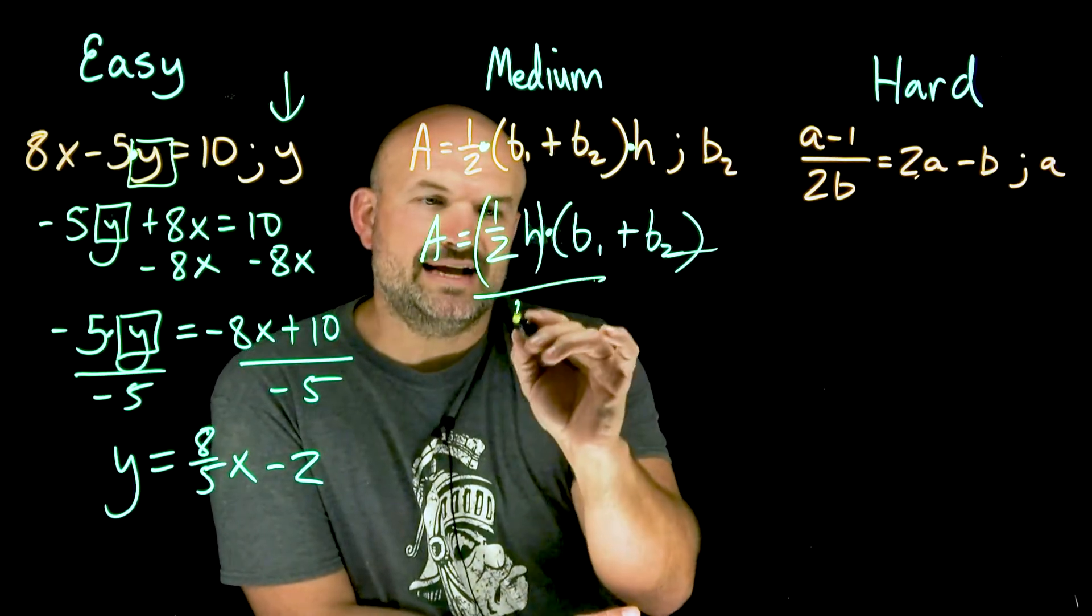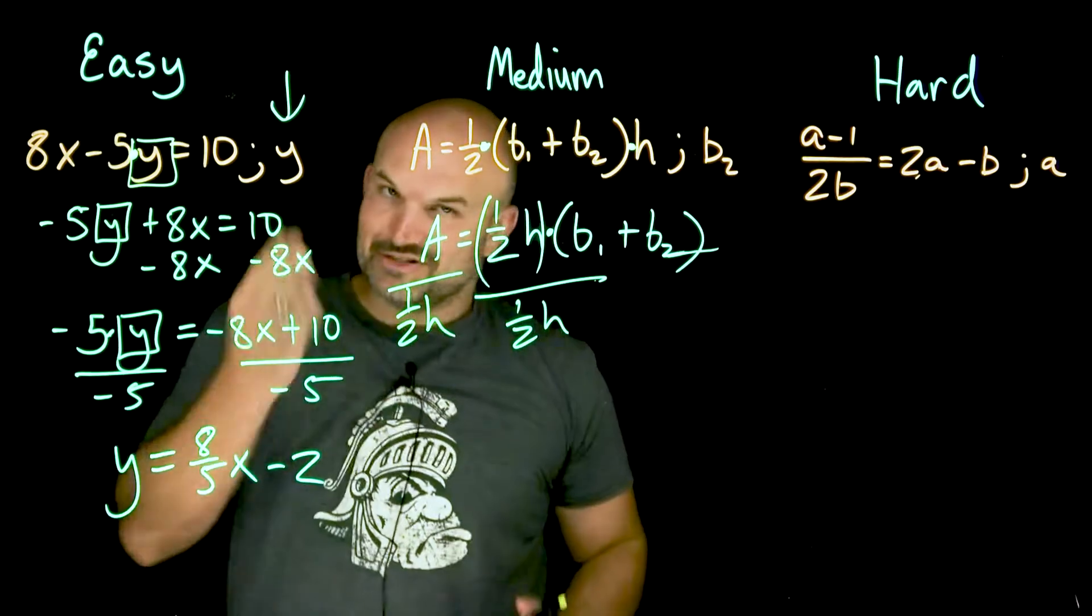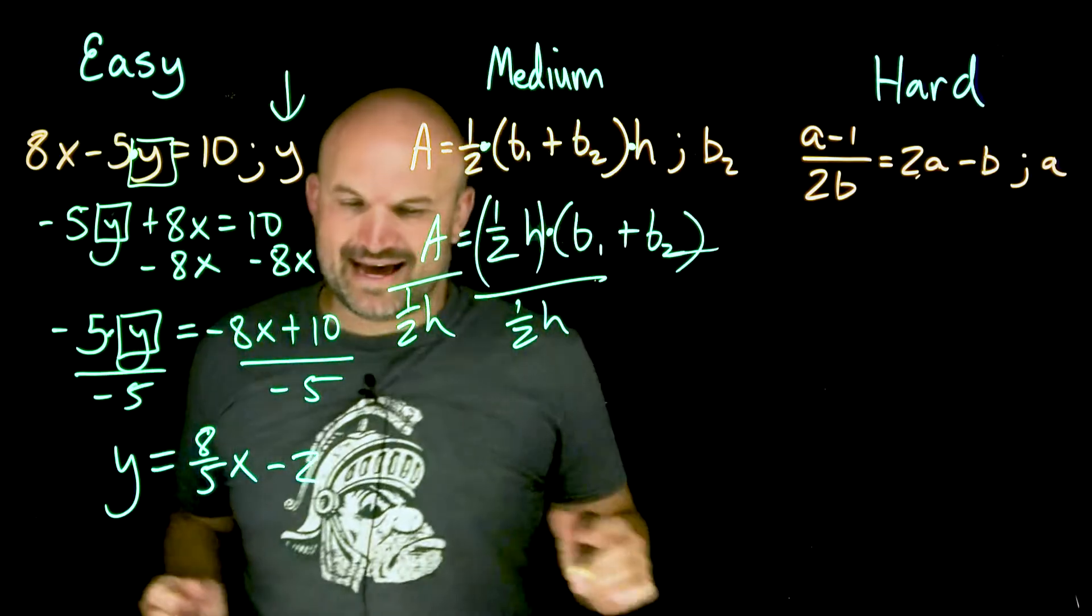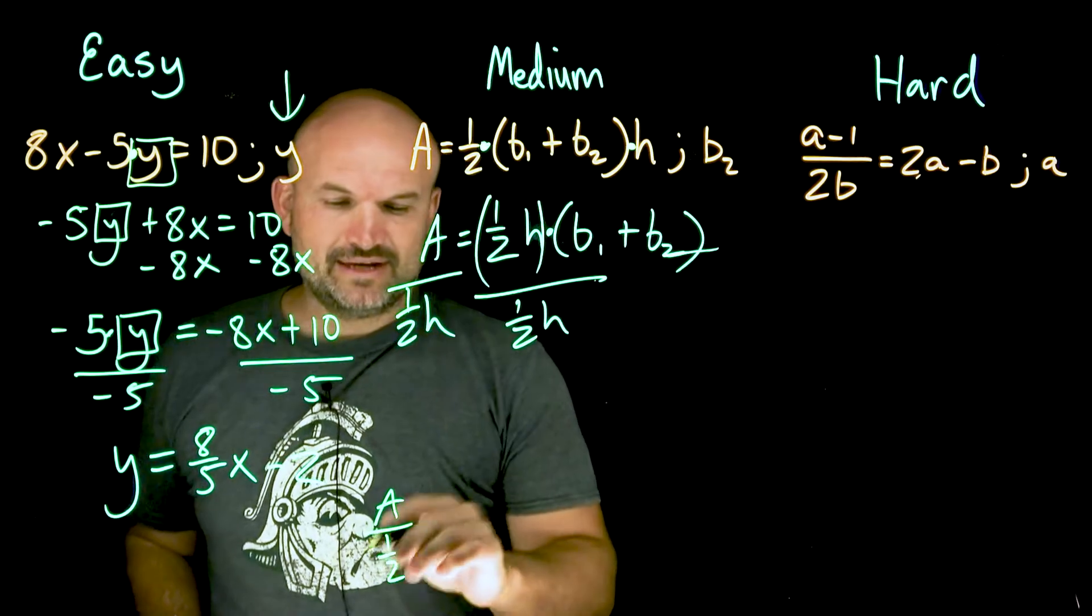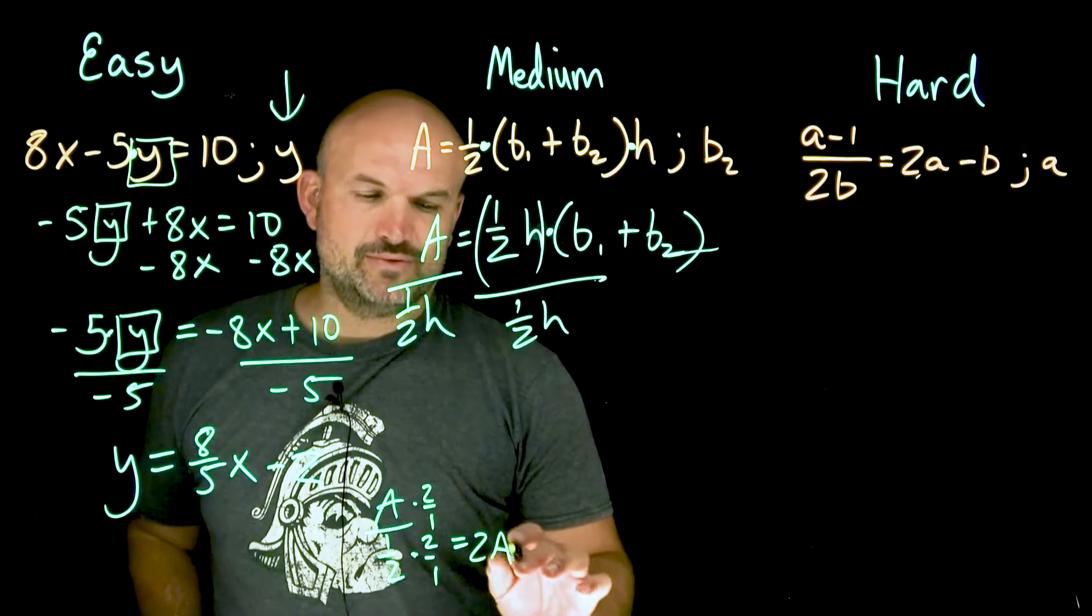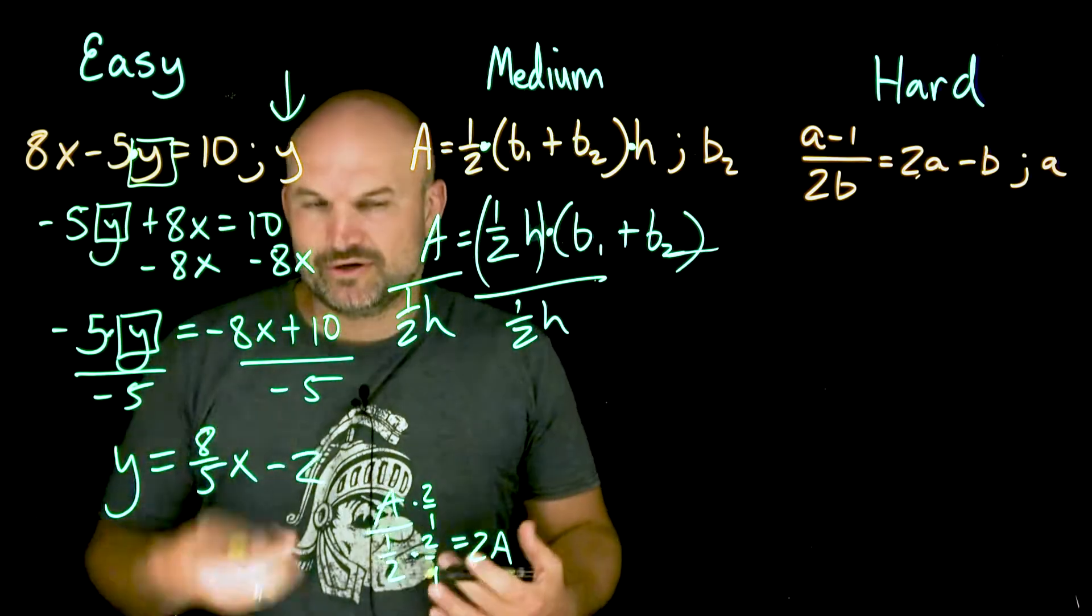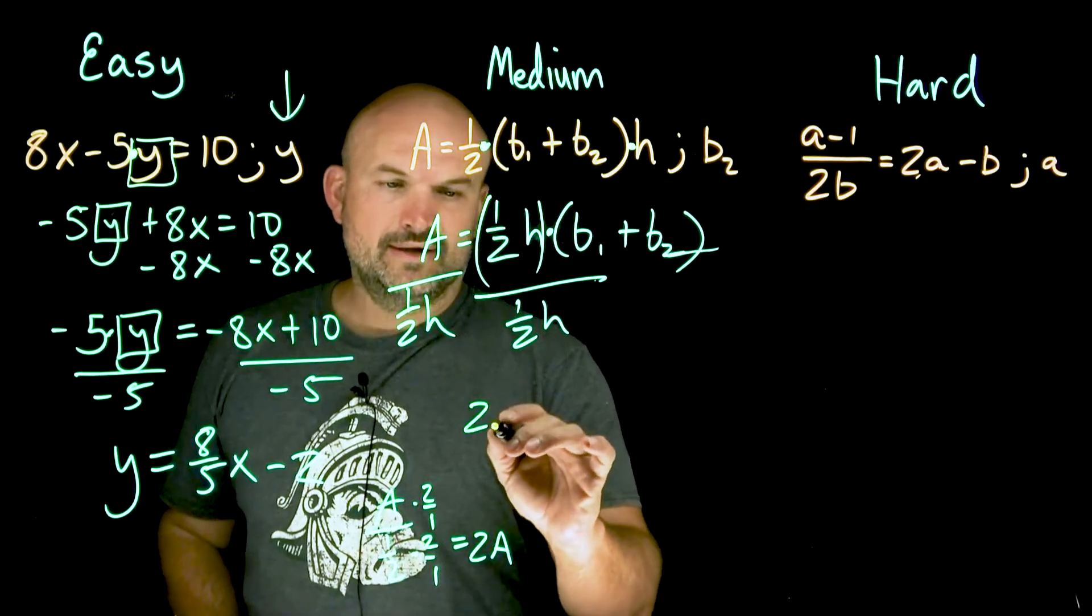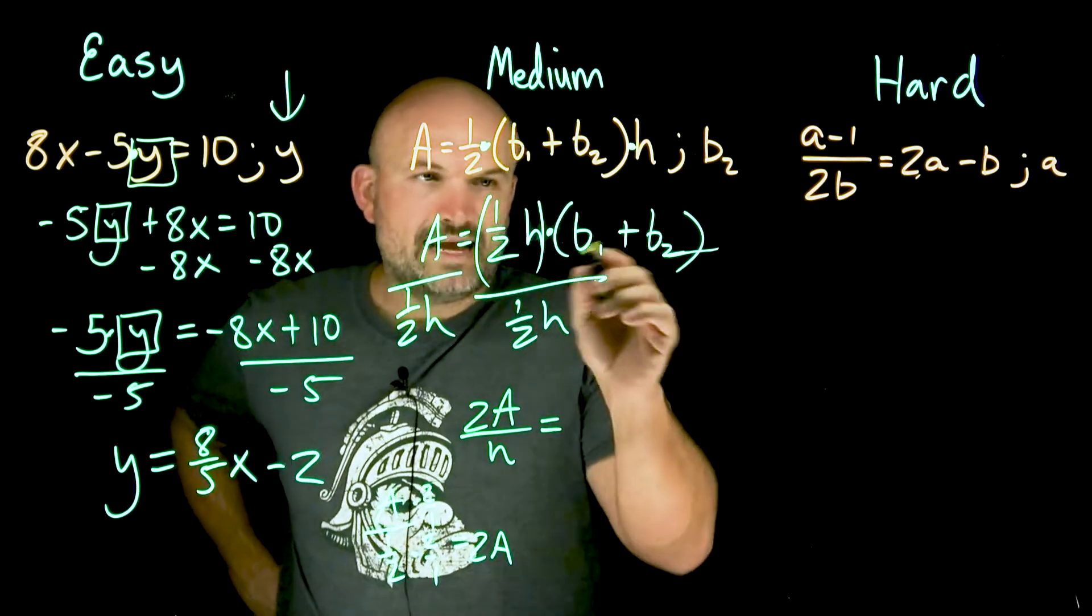So how do we undo that? Well, we're gonna have to divide by one half h on both sides. Now, here's where a lot of students will make their mistake because they forget about fractions. They're like, oh crap, how do I divide by one half? So let's just do a quick little review. a divided by one half. If I wanna get rid of one half in the denominator, I can multiply by two over one, which is just gonna give me a two a. So remember, dividing by one half is the same thing as multiplying by its reciprocal. The reciprocal of one half is going to be two. So therefore, this is going to be a two a divided by h is now equal to, well, a b1 plus b2.